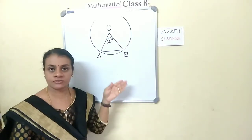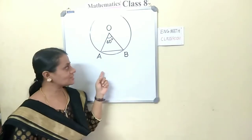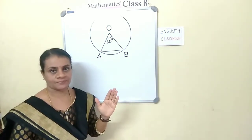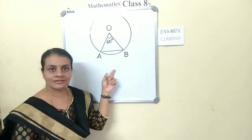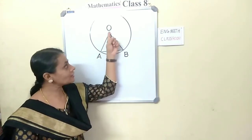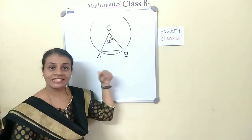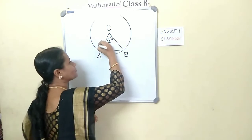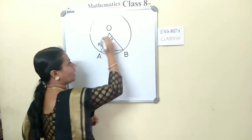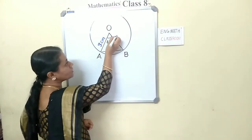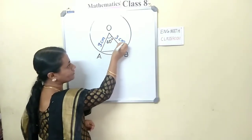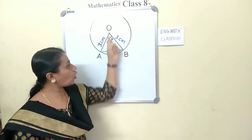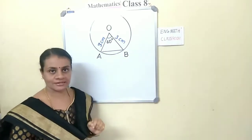What are the data given in the question? O is the center of the circle and the radius of the circle is 3 cm. The radii of the circle are OA and OB — these two are radii of the circle and each is 3 cm. So OA is 3 cm, OB is also 3 cm. And another thing given is that angle AOB is 60 degrees.